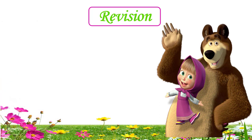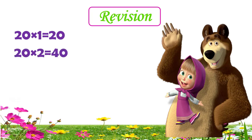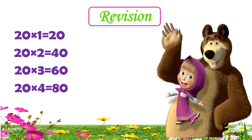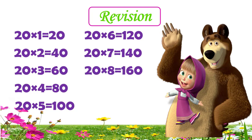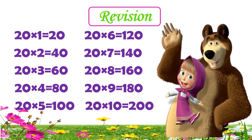Now children, let's quickly revise the table of 20. 2 1s are 20, 2 2s are 40, 2 3s are 60, 2 4s are 80, 2 5s are 100, 2 6s are 120, 2 7s are 140, 2 8s are 160, 2 9s are 180, 2 10s are 200.